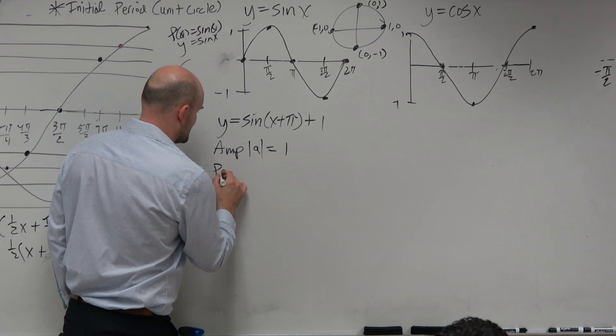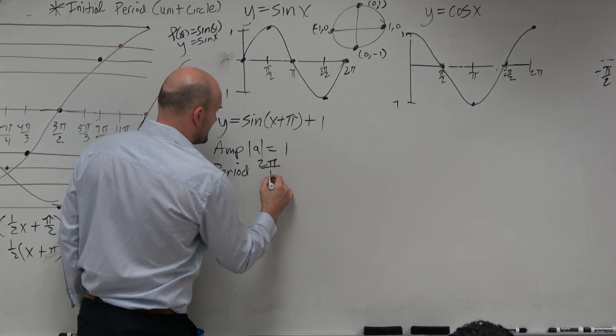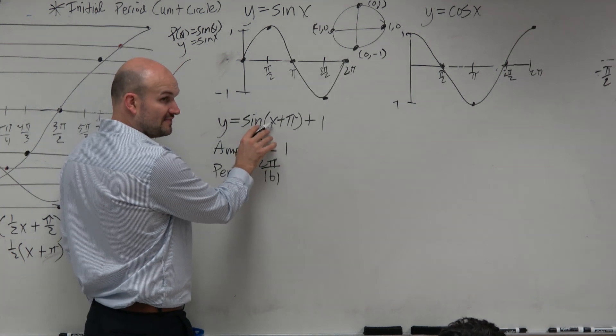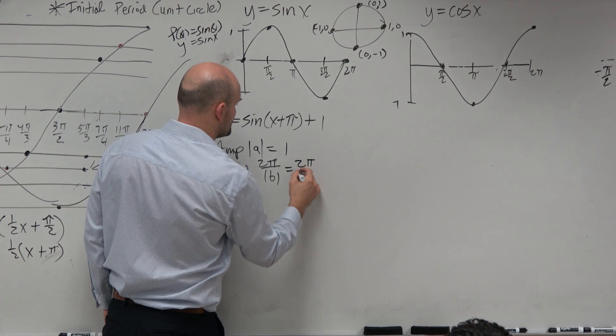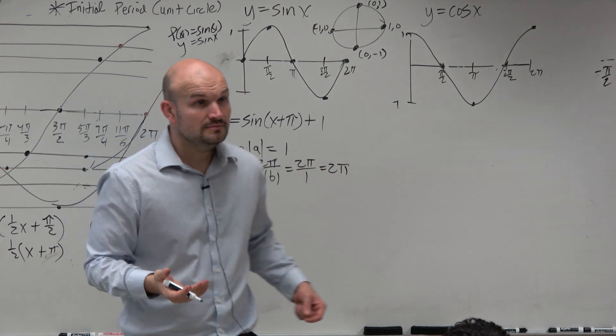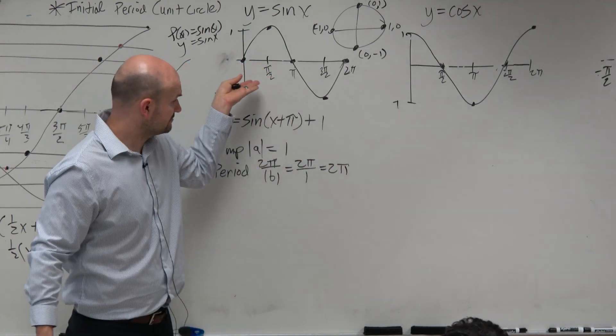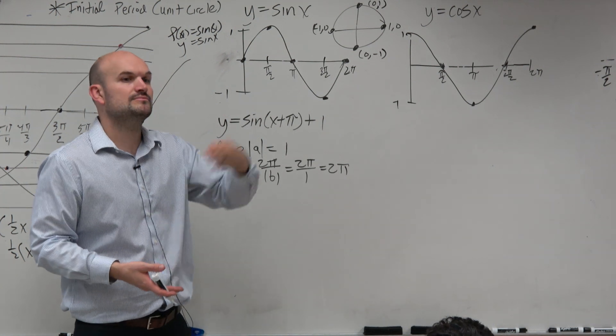Period is the distance it takes the graph to repeat itself, which for sine and cosine is 2π divided by the absolute value of b. b is our coefficient of x, or what we're multiplying on the inside, which in this case is just going to be 1. So therefore, we have 2π. So so far, my graph is just like the parent graph. It has a maximum and minimum of negative 1 to 1, and it repeats every 2π.